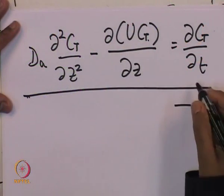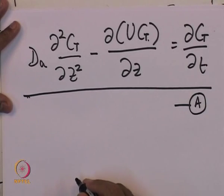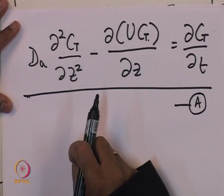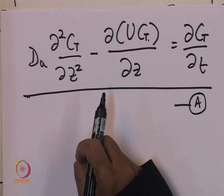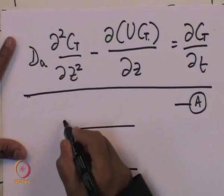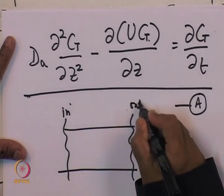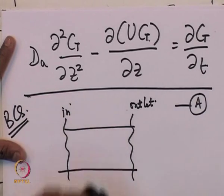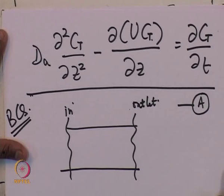This is the expression I am going to deal with. By solving this equation I will get the tracer concentration as it changes inside the reactor at any given time and position. To solve this equation, I need boundary conditions. These boundary conditions are quite peculiar and we will spend some time understanding them.